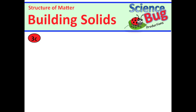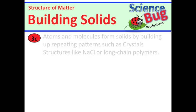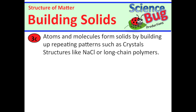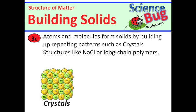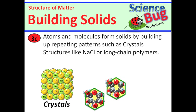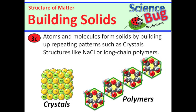We've been studying the structure of matter, and today we'll be going over the formation of crystals and polymers. Standard 3C tells us that atoms and molecules form solids by building up repeating patterns such as crystal structures like sodium chloride or by creating long chain polymers like this carbohydrate polymer made by linking together glucose molecules.